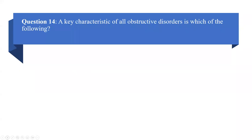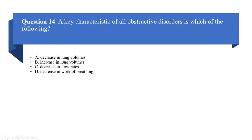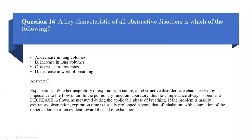Question fourteen: a key characteristic of all obstructive disorders is which of the following? A) Decrease in lung volumes, B) decrease or increase in lung volumes, C) decrease in flow rates, D) decrease in work of breathing. The correct answer is C, decrease in flow rates. For restrictive disorders, you have smaller capacities and volumes. For obstructive disorders, the characteristic finding is decreased flow rates. That's the classic distinction between obstructive and restrictive disorders.